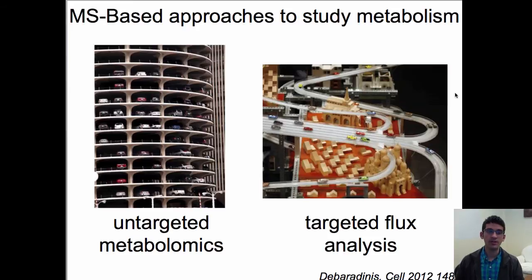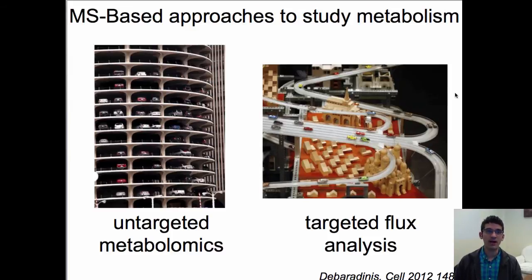What I'm showing here is an analogy of these two approaches with respect to cars, borrowed from Ralph de Berendini's published in a recent review in Cell 2012. What untargeted metabolomics traditionally allows us to do is survey a lot of cars without bias — like going into a parking garage and counting how many red cars, blue cars, Dodges, Fords, etc. But we don't actually learn anything about where those cars are coming from or where they are going. It gives you a static inventory view, but it doesn't tell us anything about their destinations.